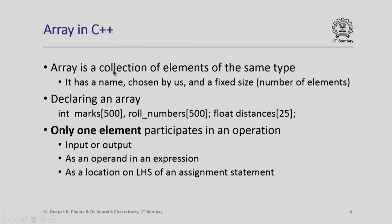An array in C++ is a collection of elements of the same type. It has a name which can be chosen by us and it has a fixed size which represents the total number of elements that the array can hold.